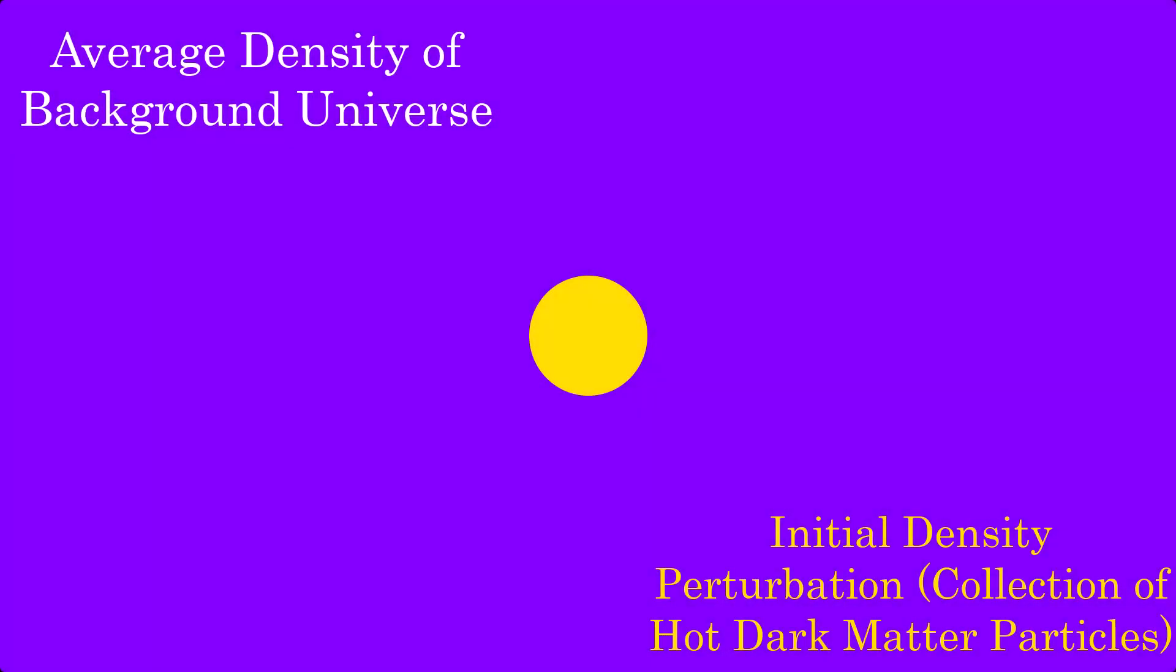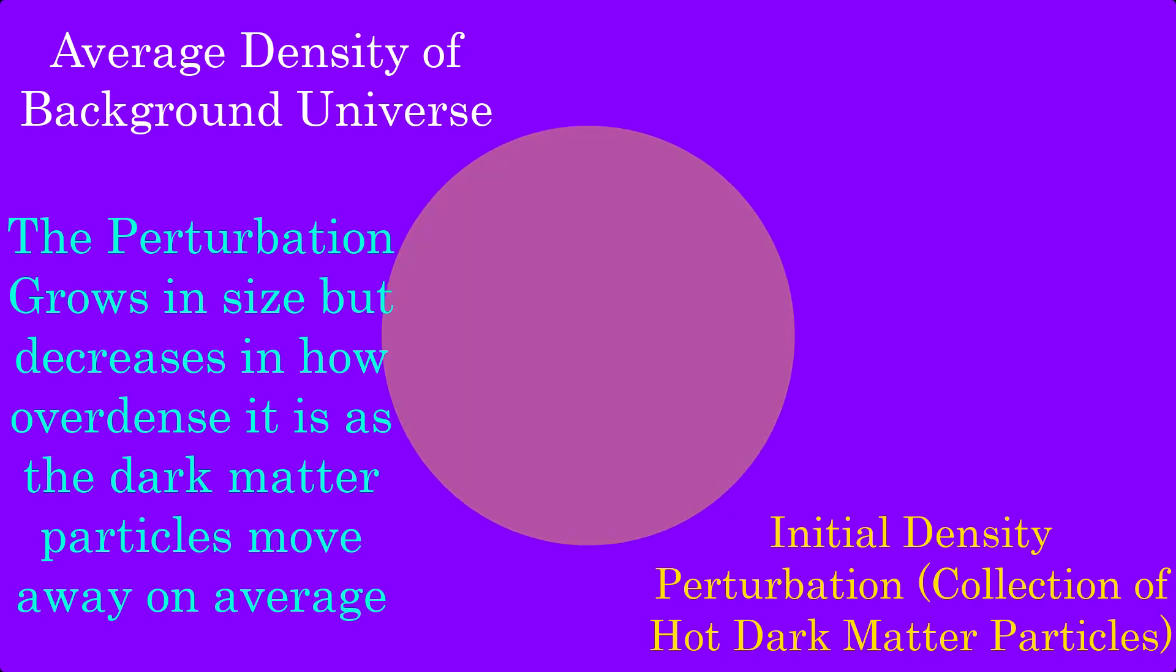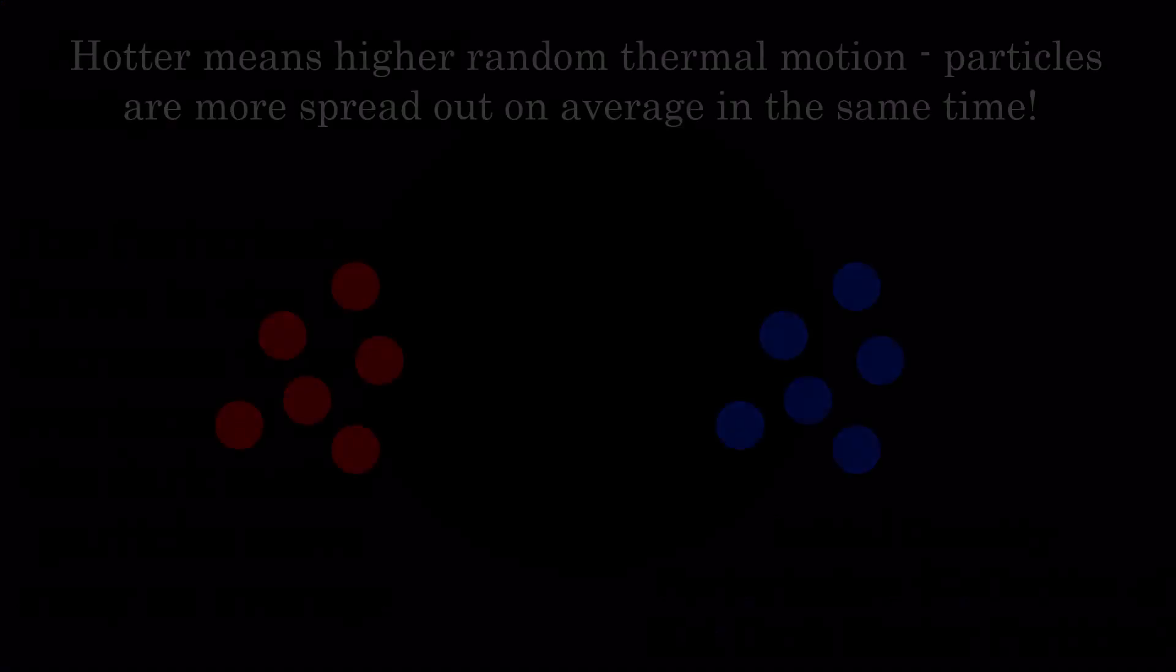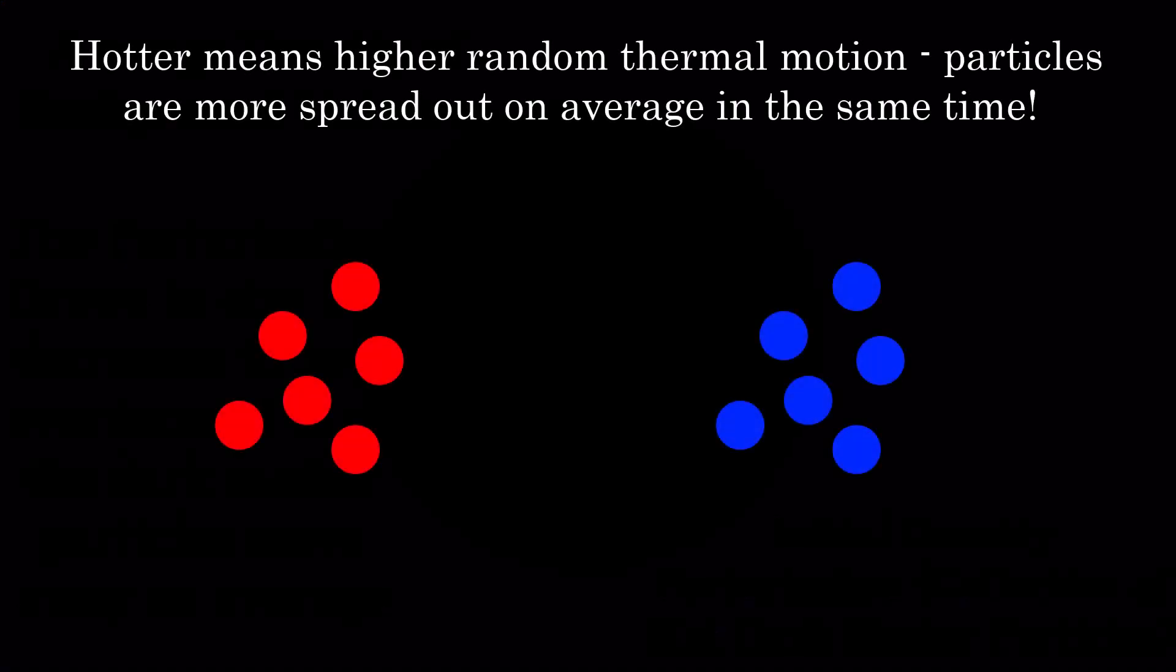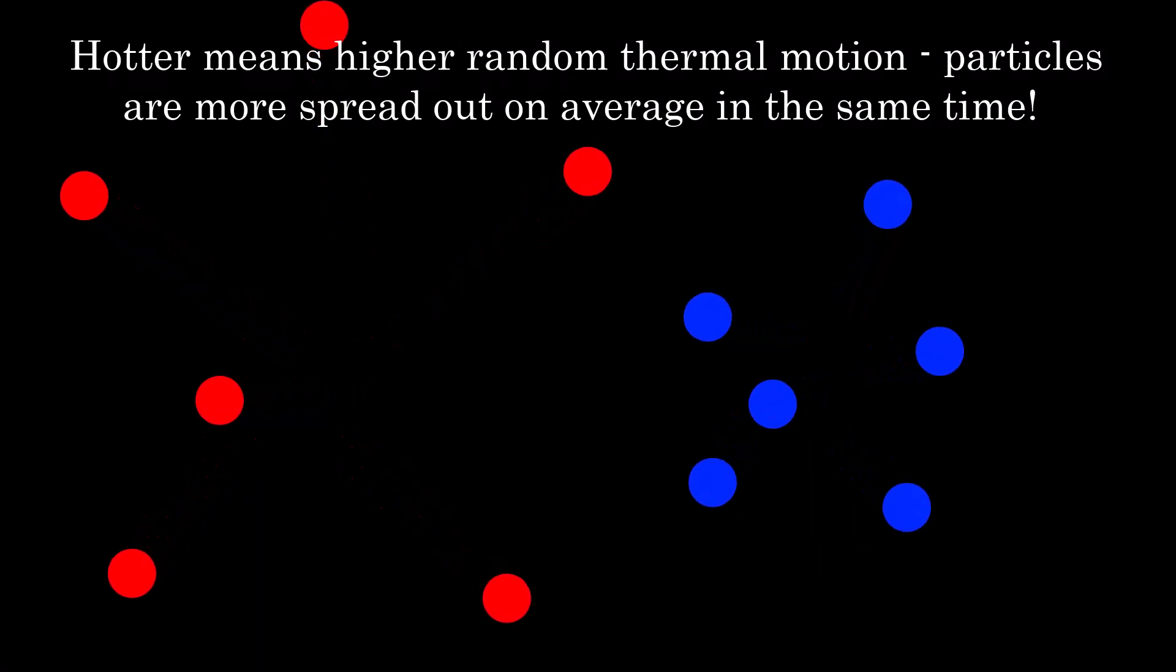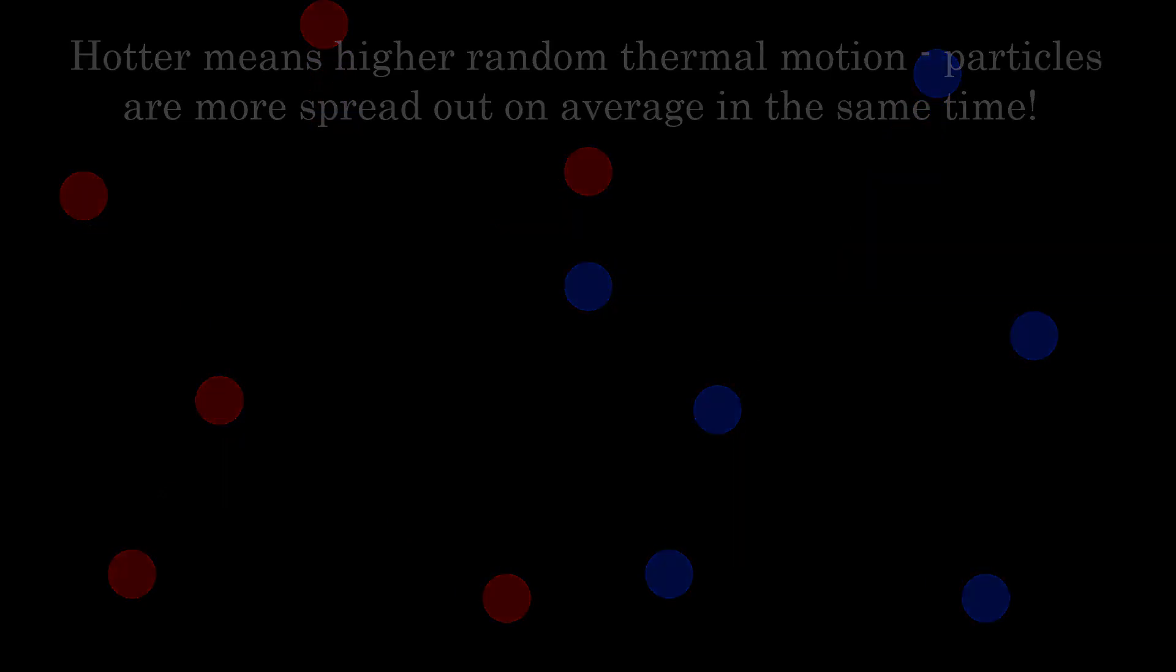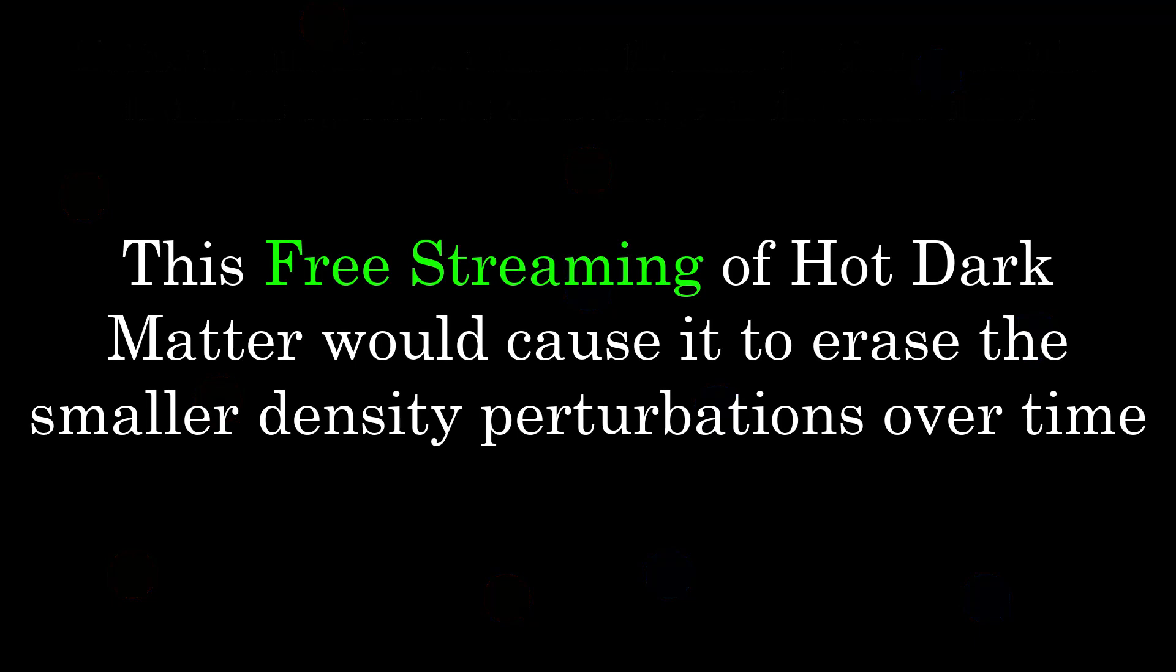At an initial density perturbation, the hot dark matter is close together. As time goes on, the dark matter on average spreads out as the high random thermal motion of the particles in the perturbation means the perturbation begins to smooth out overall. Think of trying to contain a bunch of fast-moving particles. If there are no walls or only a small potential holding them together, they will quickly spread out over time, then a colder, more slowly moving collection of particles. This effect is known as free streaming, and is the key in deducing the temperature of dark matter in the universe.